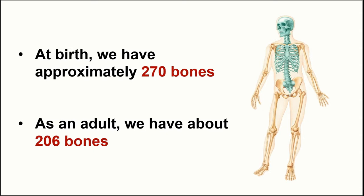At birth we have approximately 270 bones, and as an adult we have about 206 bones. So the question becomes: where do these roughly 64 bones go? They do not disappear. It turns out that as we age, bones tend to fuse together — several nearby bones will fuse into one solid piece of bone — so we have more bones at birth and fewer as an adult.